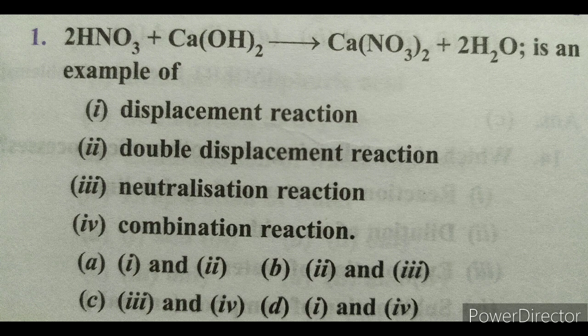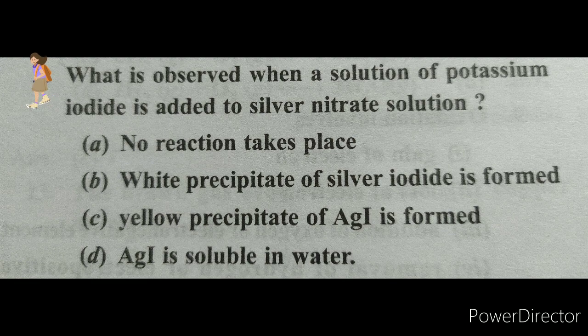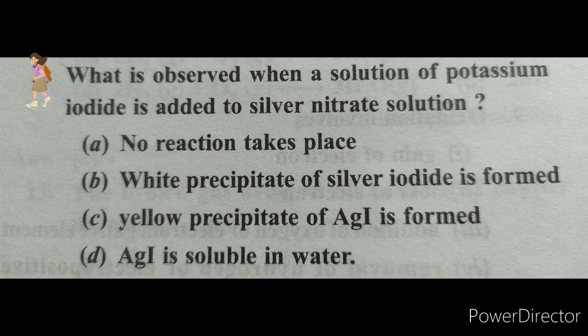Question number two: What is observed when a solution of potassium iodide is added to silver nitrate solution? The options given are: (a) no reaction takes place, (b) white precipitate of silver iodide is formed, (c) yellow precipitate of AgI is formed, (d) AgI is soluble in water.